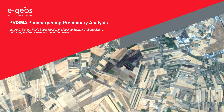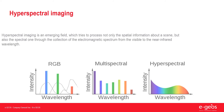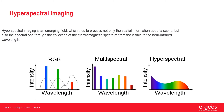Hello everyone, I'm Mauri Di Donna, and I'm presenting a preliminary analysis on PRISMA hypersharpening. Hyperspectral imaging is an emerging field which tries to process not only the spatial information about the scene, but also the spectral one through the collection of the electromagnetic spectrum from the visible to the near infrared wavelength.